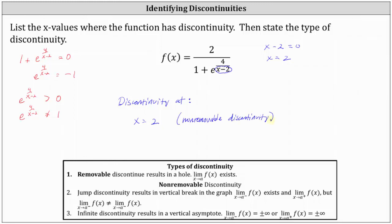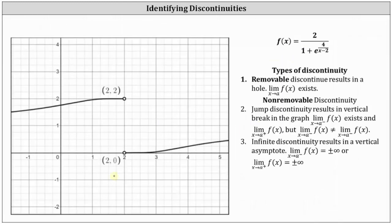However, there are two types of non-removable discontinuities. One is jump discontinuity that results in a vertical break in the graph, and the other is infinite discontinuity that results in a vertical asymptote of the graph. To be more specific about the type of non-removable discontinuity, let's take a look at the graph of f of x. Looking at the graph, notice how we have jump discontinuity, not infinite discontinuity, because we have a vertical break in the graph, not a vertical asymptote.